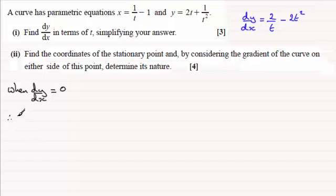So therefore 2/t minus 2t² must equal zero. And with this I'm going to multiply both sides by t to eliminate the fraction there. So we're going to get 2 minus 2t³ equals zero.